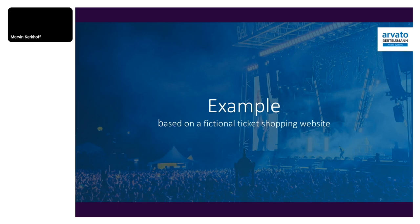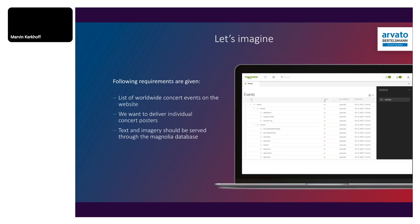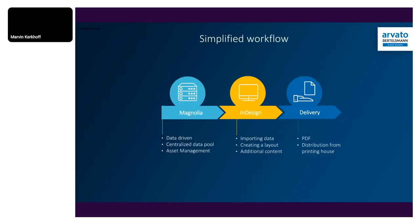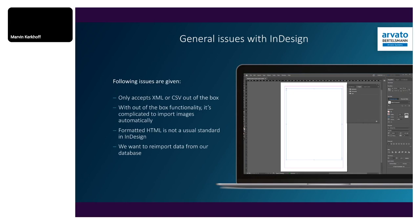So what will we do? We have an event app in Magnolia which holds all the data — the text and imagery we need. We also have the website we want to feed with that data, and we want to print individual posters out of InDesign. The simplified workflow looks like this: data in Magnolia, InDesign as layout tool, and print delivery from our printing hubs.